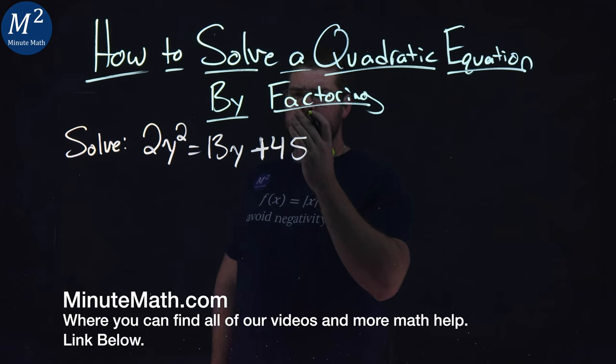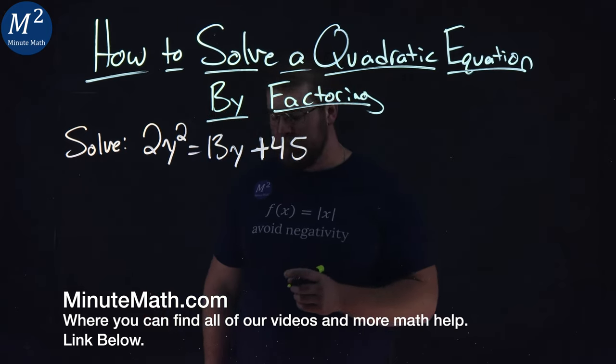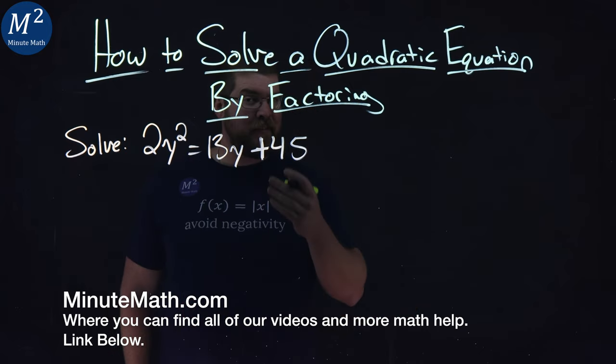We're given this problem right here: 2y squared equals 13y plus 45. We're going to solve it by factoring.